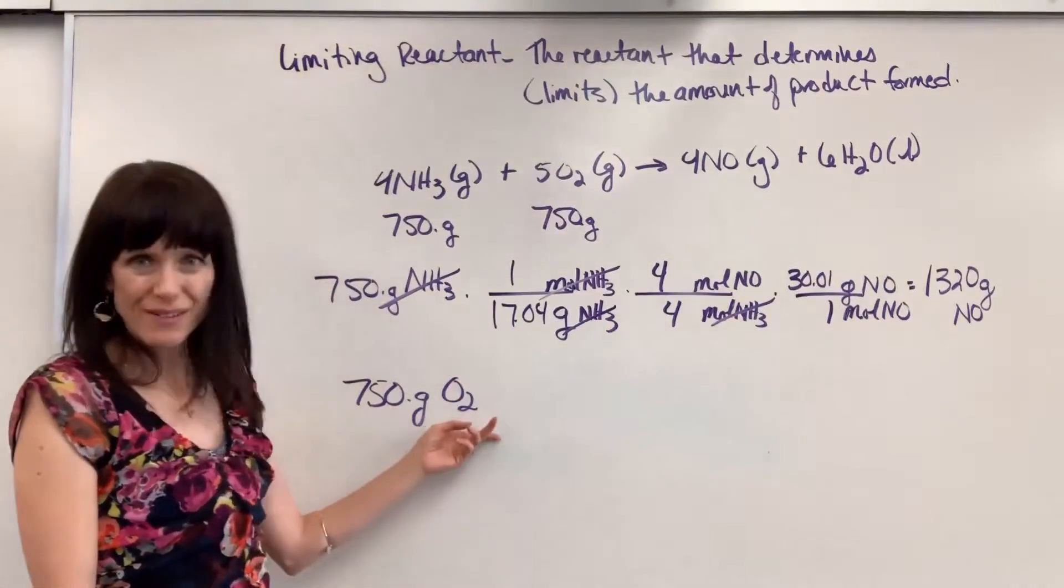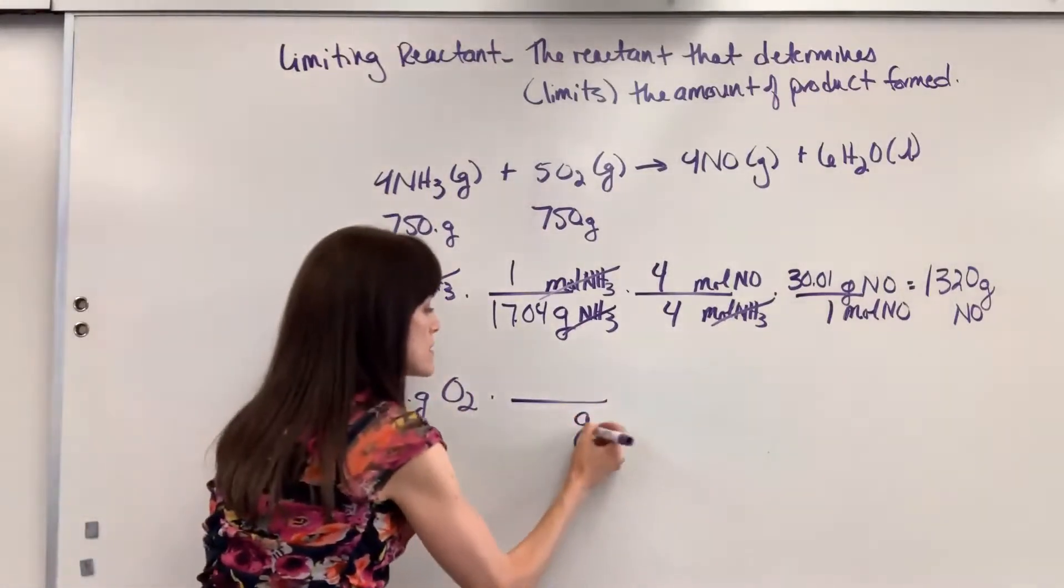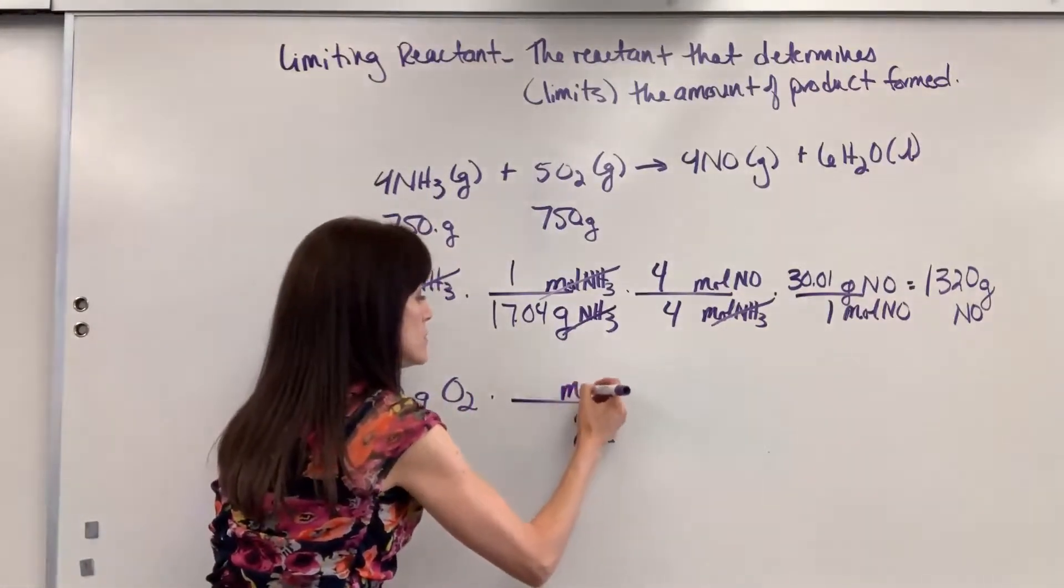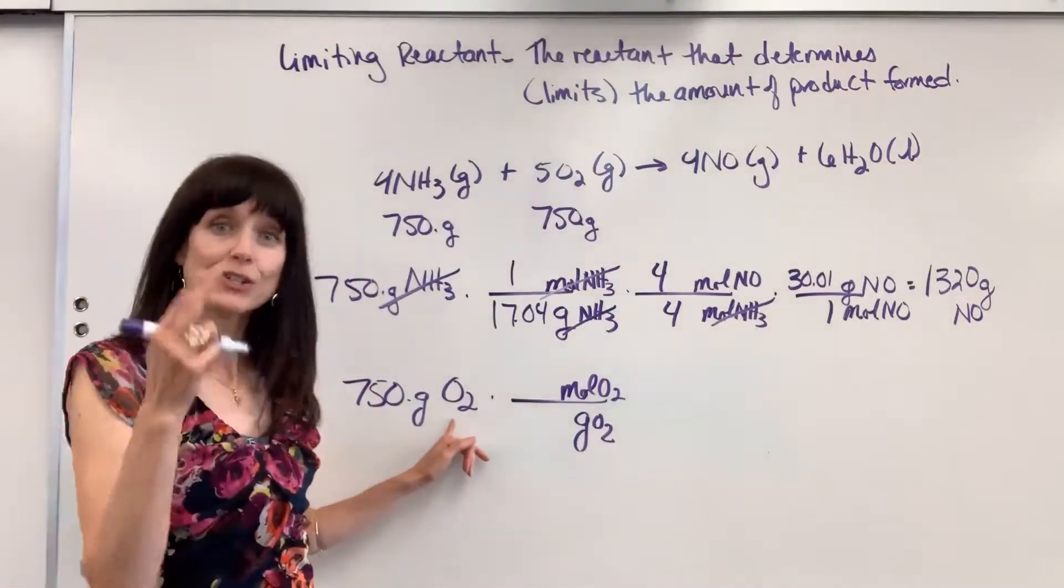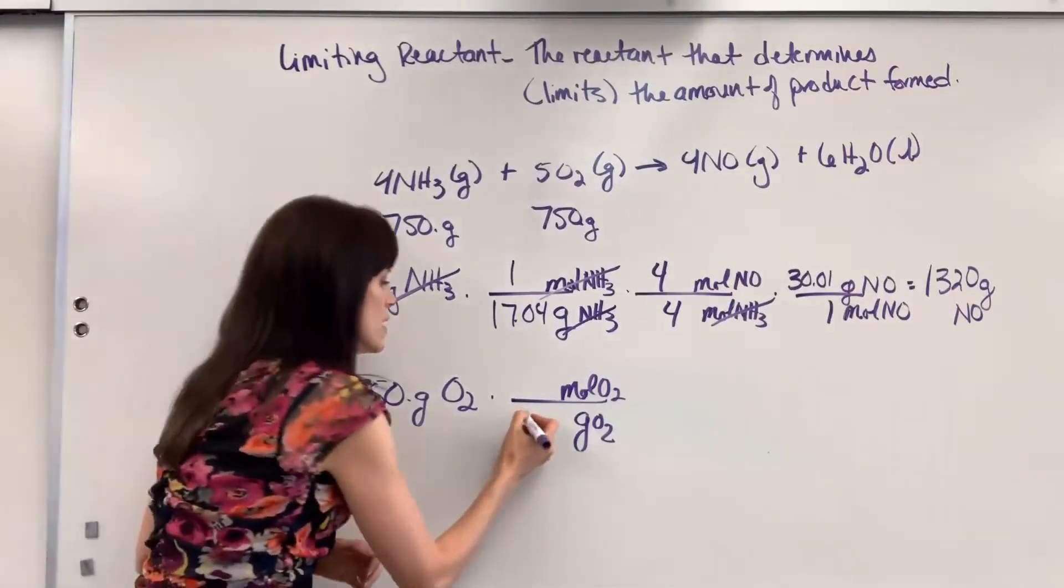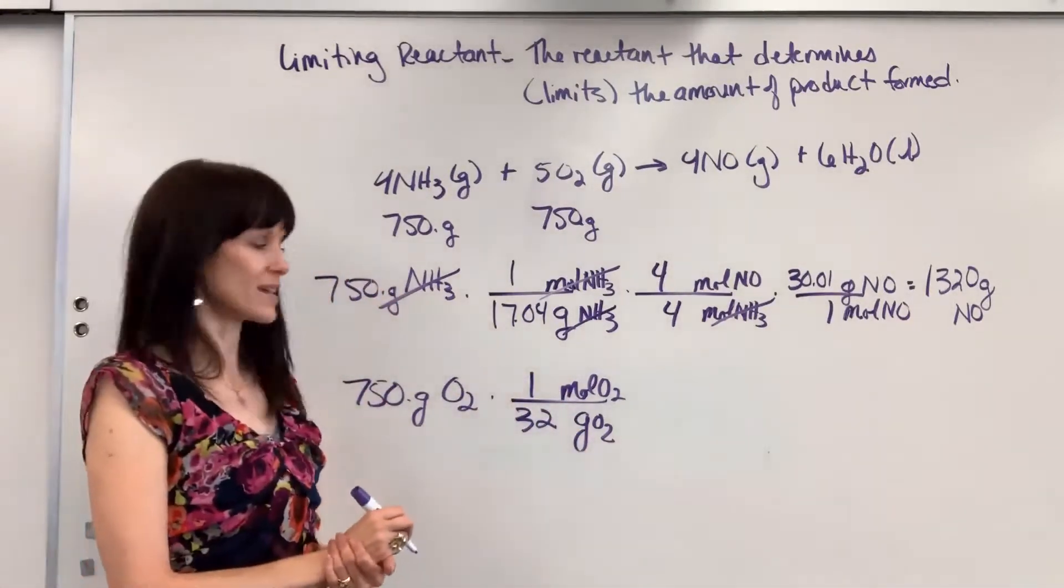And only one of these will end up being the correct one. We're looking for that limiting reactant. We're looking for the one that limits how much will be made. Okay, I have 750 grams of oxygen.